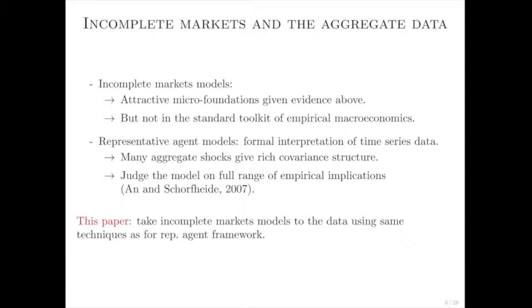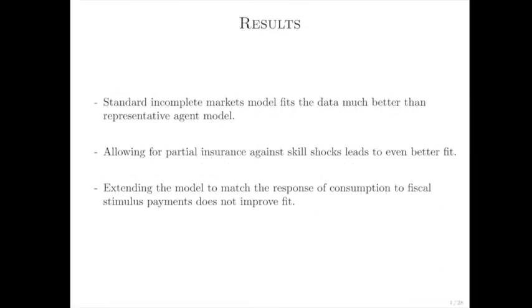I'm going to apply this technology to think about the joint dynamics of consumption, labor income, and employment conditions. I come away with three main conclusions. First, what I would roughly call the standard incomplete markets model fits the data much better than the full insurance representative agent model. Second, allowing for partial insurance against skill shocks leads to an even better fit, which complements what people have found in panel data — it seems like households have some measure of partial insurance. Third, if I extend the model in a slightly crude way that generates strong responses of consumption to fiscal stimulus payments, it doesn't actually fit the data any better.